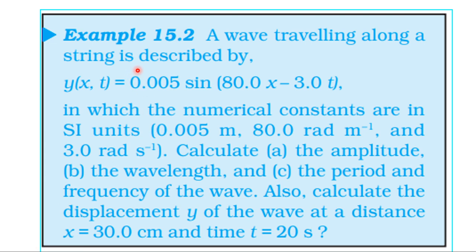From the NCRT textbook, from the topic of waves, we are solving example 15.2. A wave travelling along a string is described by y equals 0.005 sin(80x minus 3t), in which the numerical constants are in SI units.